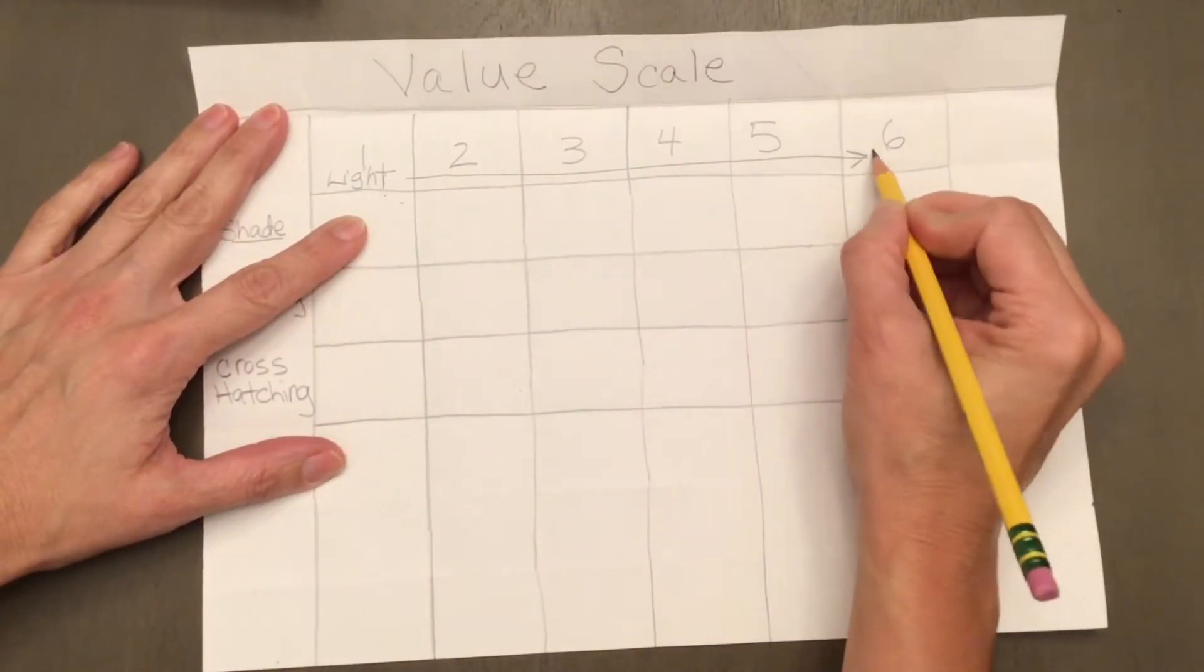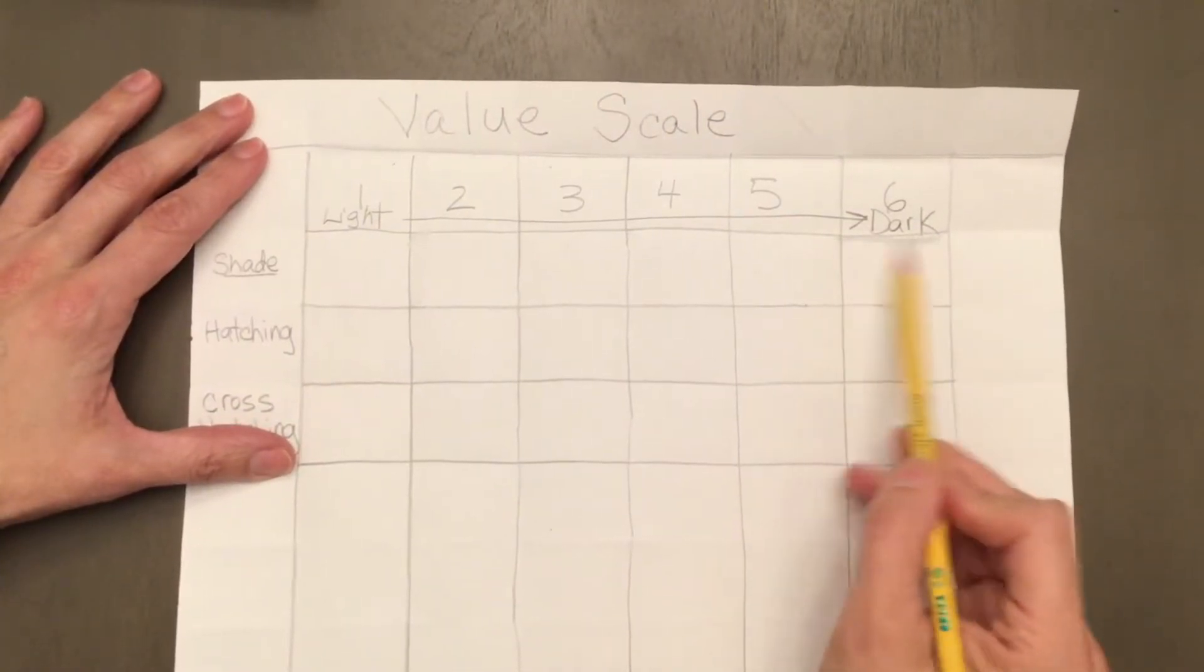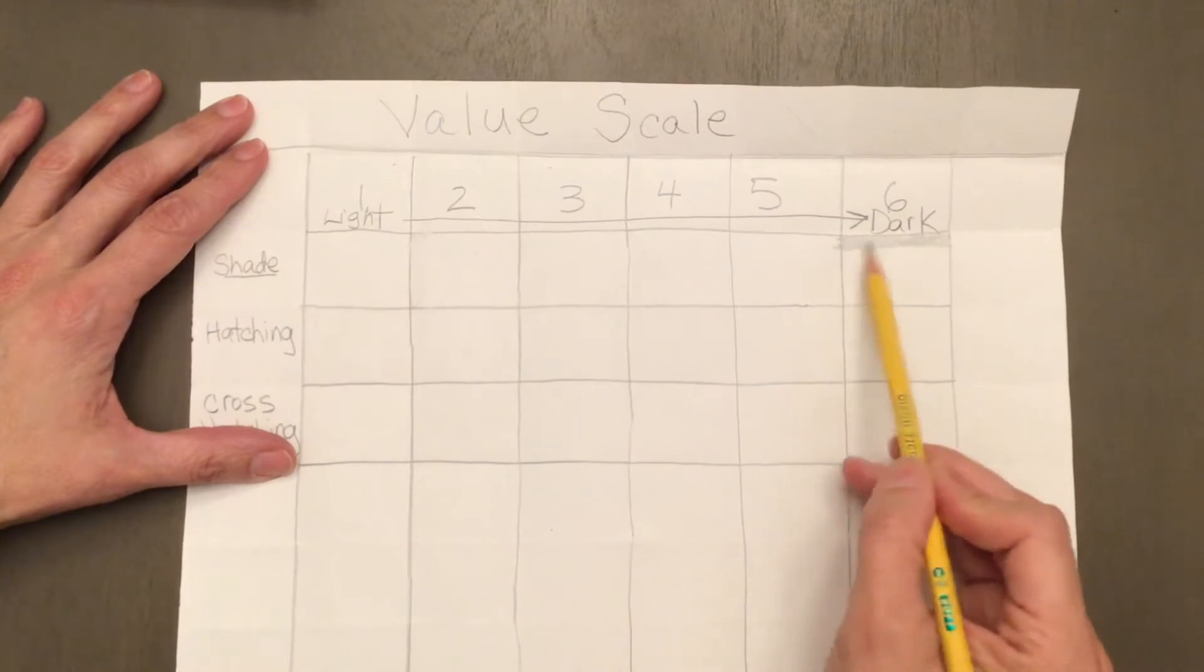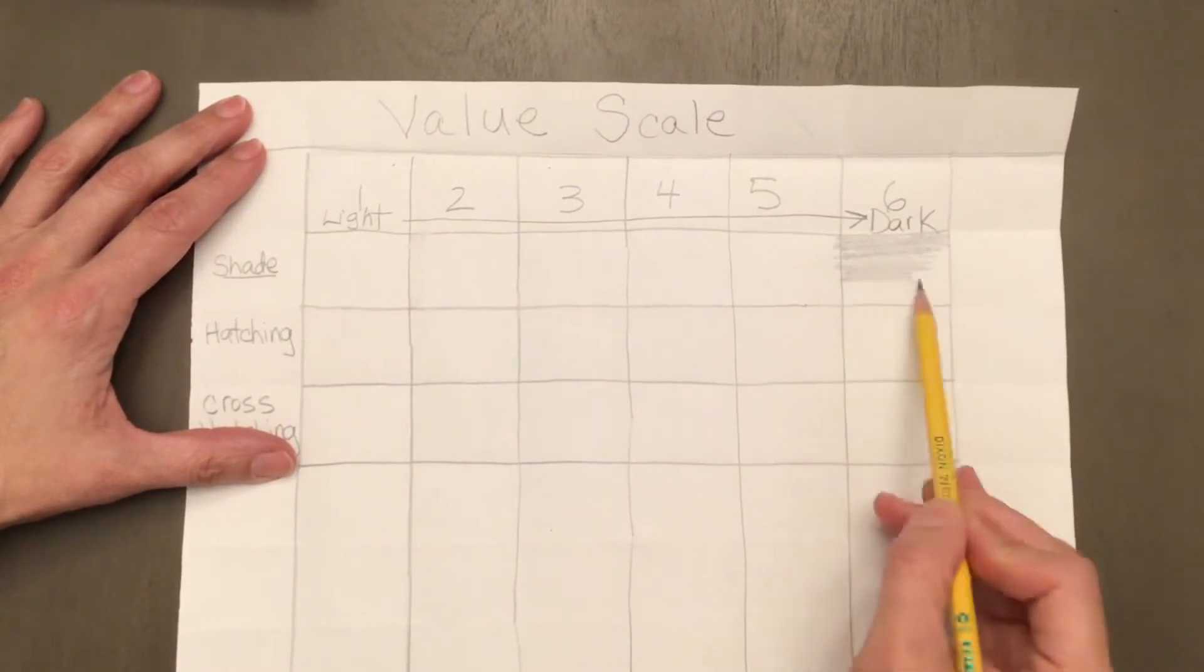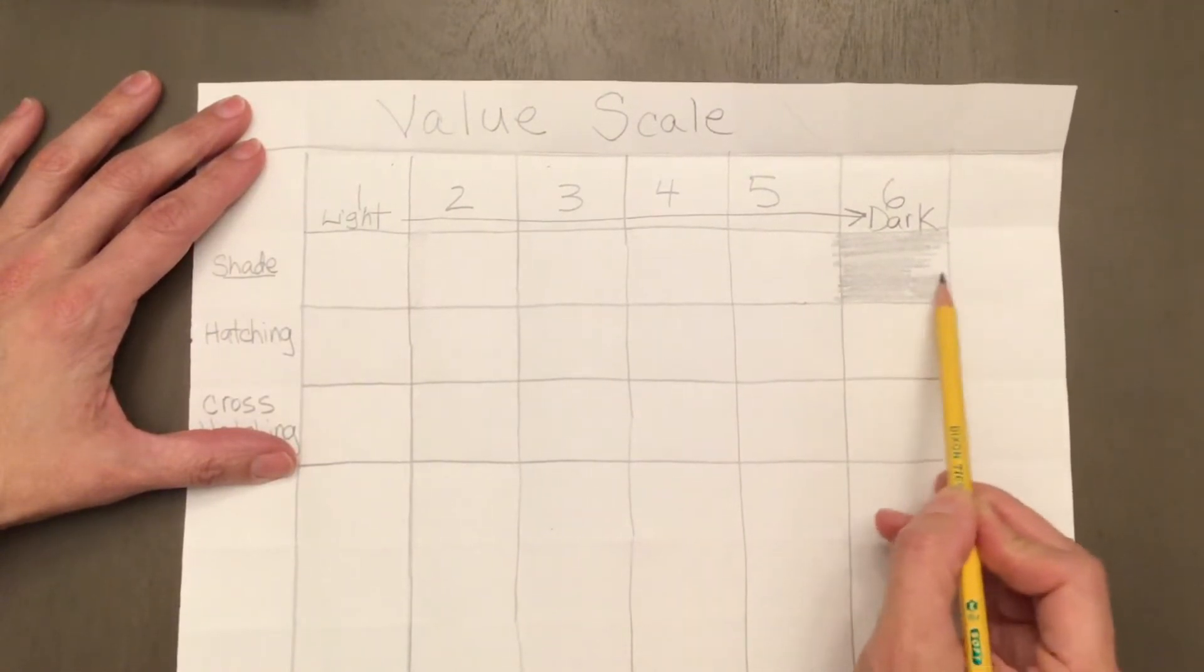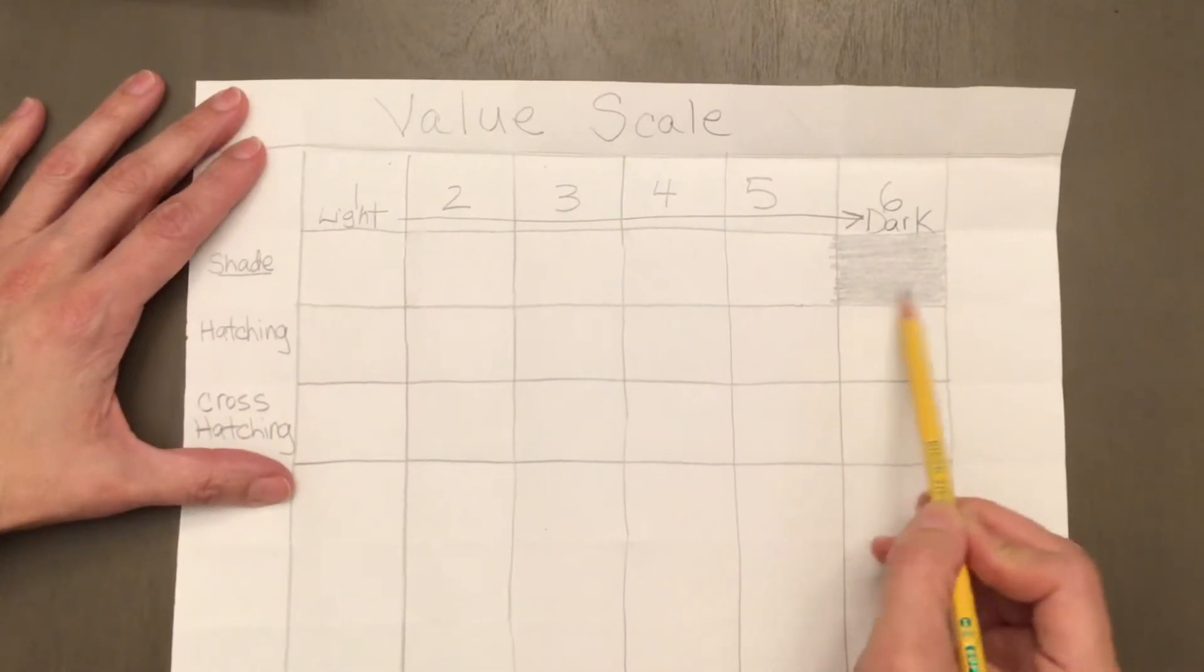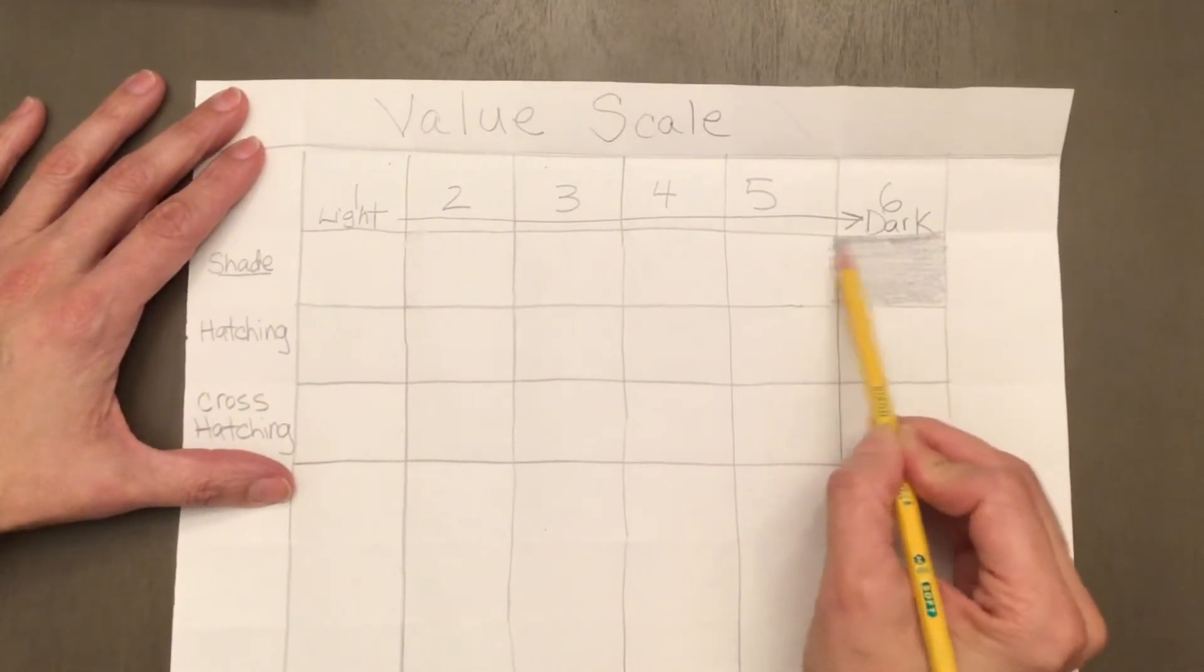Value is going to go from light to dark. We're going to start with the dark one first, make it as dark as you can, and then we're going to move to the lighter ones.